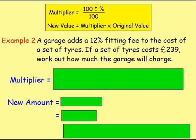Example 2: a garage adds a 12% fitting fee to the cost of a set of tyres. If a set of tyres costs £239, work out how much the garage will charge. This again is a question where you could work out 12%, get that number, and just add it on to the original. But again, this lesson is all to do with using multipliers and getting used to using them, so I'm going to use that method.